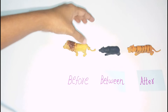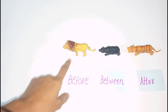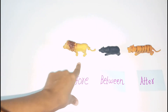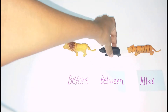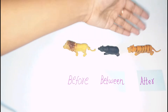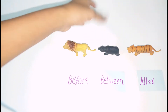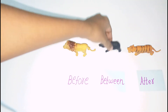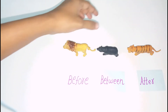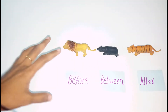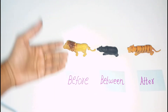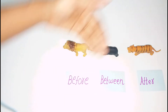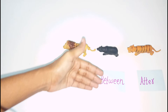We will ask you questions. Which animal comes after the lion? The answer is the bear. Which animal comes before the tiger? The answer is the bear. We will ask: which one is first? Which one is last? Which one is in between?